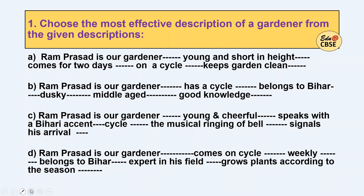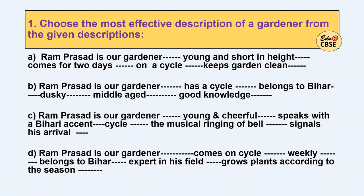For the first one, the best approach is to read all the options and try to rule out why a particular option is not the answer. We have to find the most effective description of a gardener. Option A says Ram Prasad is our gardener — young, short height, comes for two days, on a cycle, and keeps the garden clean. This seems okay, but we need to read all the options to select the most effective one.